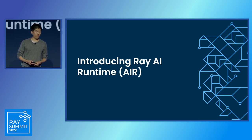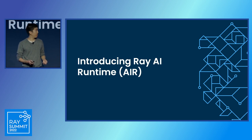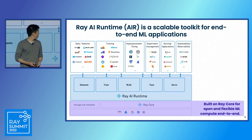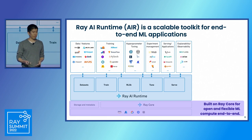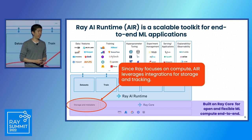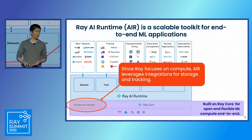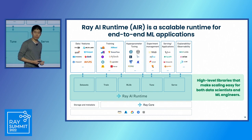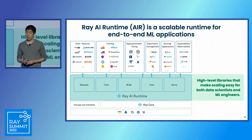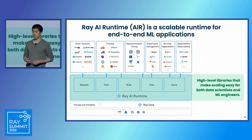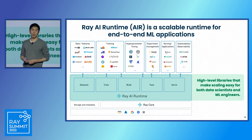So let's talk about Ray Air. Air is a scalable toolkit for end-to-end ML. Air is built on Ray core for open and flexible ML compute end-to-end. Ray is really focusing on distributed compute, so Air leverages integrations for things like storage and tracking. Air also has high-level libraries that make scaling easy for both data scientists and engineers. What's new since Ray 1.0 is a unified API — Air libraries now work seamlessly with each other and integrate with the ecosystem through common integration points.